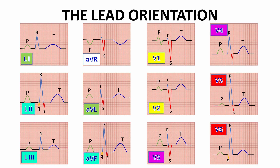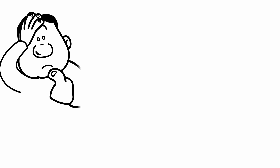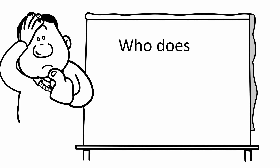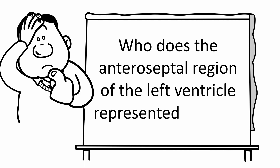By this, we have finished the leads orientation and the second chapter of ECG, which was about electrocardiographic leads. Now let's jump to the question of the day: where does the anteroseptal region of the left ventricle get represented on ECG?